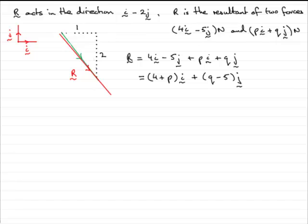So what I know is that R is going to be identical to some multiple of this vector. Let's call that multiple k. k times the vector i minus 2j. Now this is exactly the same as ki minus 2k in the j direction.